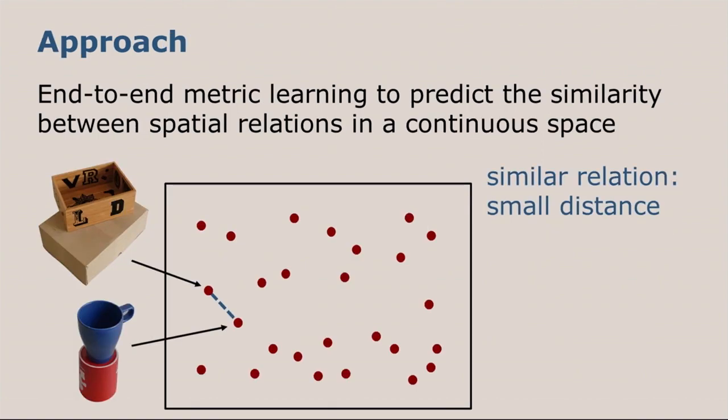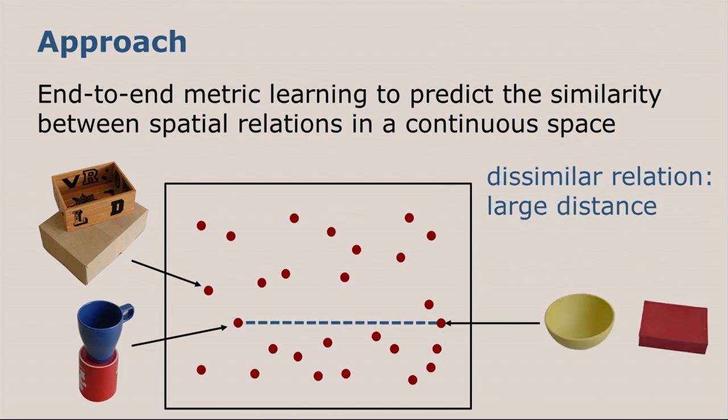So how does this work? As I said, we want to learn a distance metric. This means we have two scenes as input, and we want to output a distance that approximates the similarity. Given these two scenes, we want our metric to output a small distance, as the contained relation here is very similar. Both scenes contain a somewhat on-top relation. Whereas for dissimilar relations, as for example, the scene on the left compared to the scene on the right, we want the distance of our metric to be large.